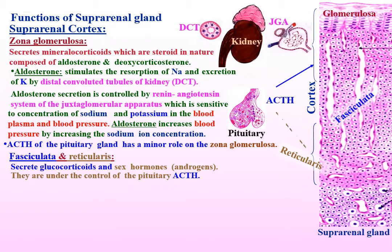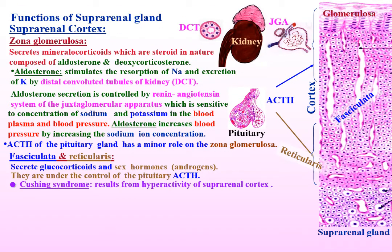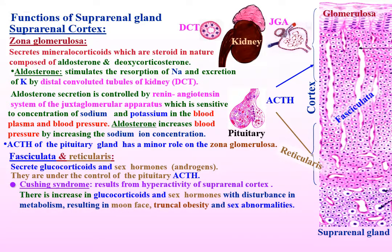Cushing syndrome results from hyperactivity of the suprarenal cortex. There is an increase in glucocorticoids and sex hormones, with disturbance in metabolism, resulting in moon face, truncal obesity, and sex abnormalities.